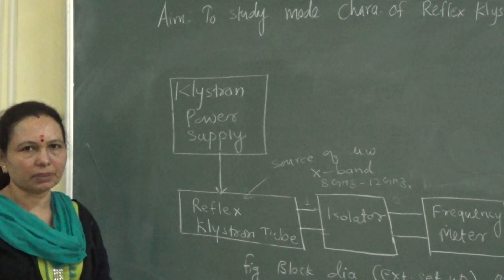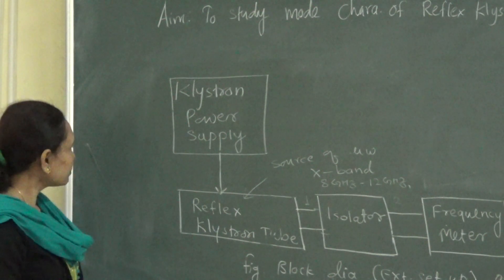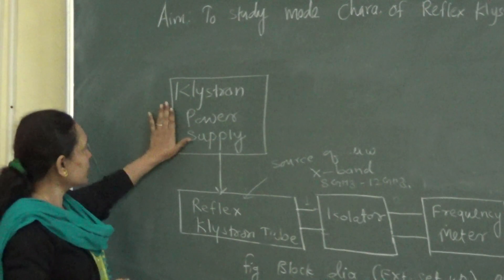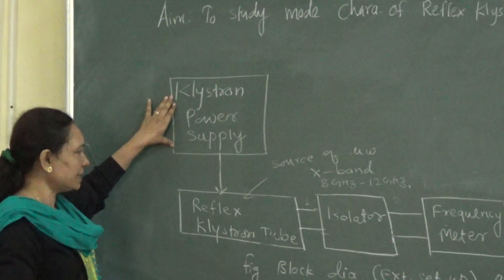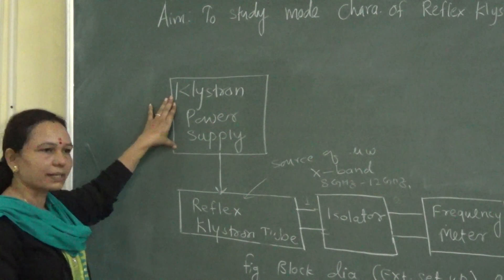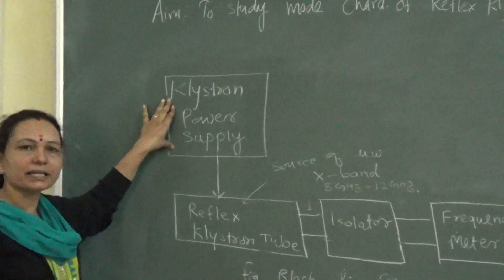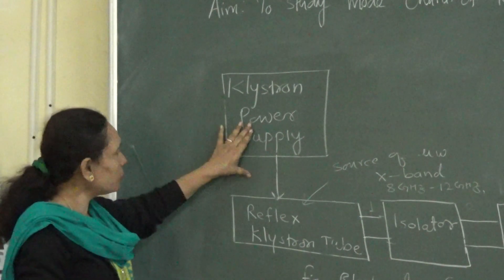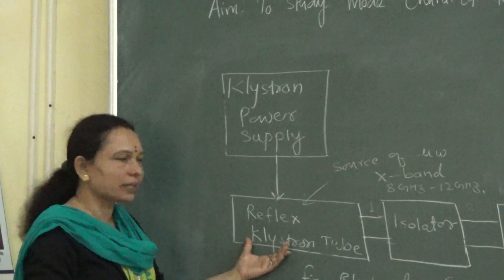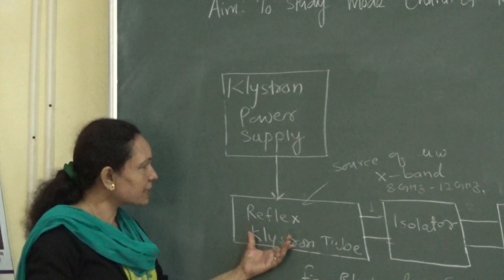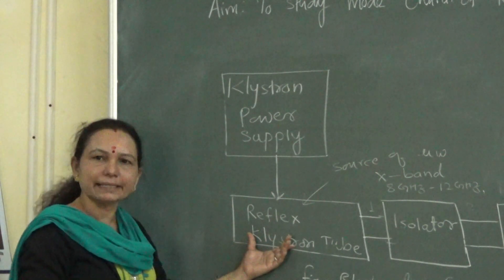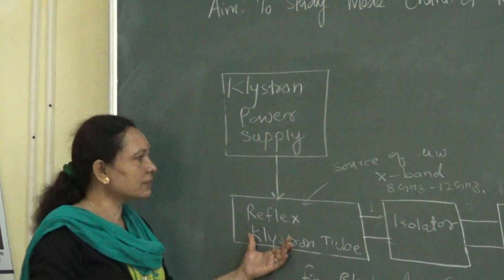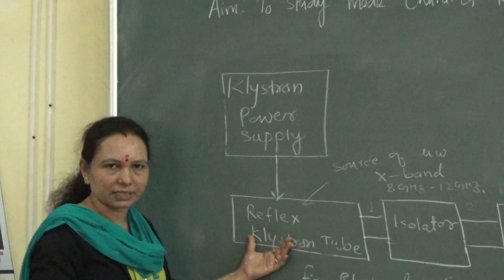Before starting the experiment, look at the experimental setup for the reflex klystron. It consists of a klystron power supply. For operation of the reflex klystron, it requires the beam voltage and the repeller voltage, which is supplied through the klystron power supply. The output of the klystron power supply is connected to the reflex klystron tube, which is used here as a generator — a source of microwaves generating frequencies in the X-band frequency range.